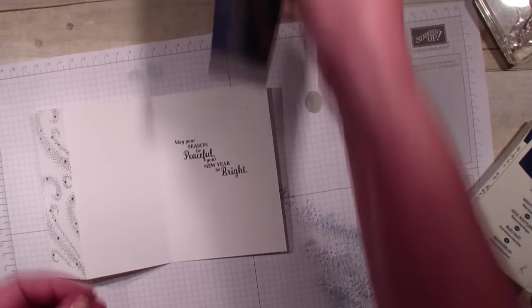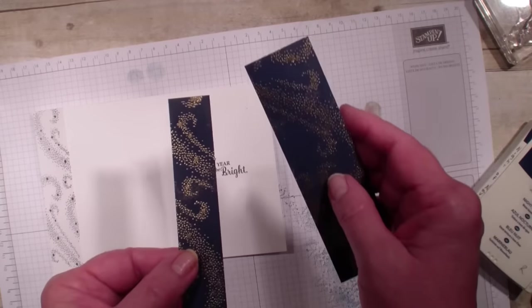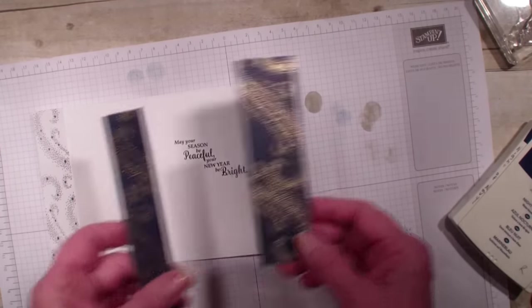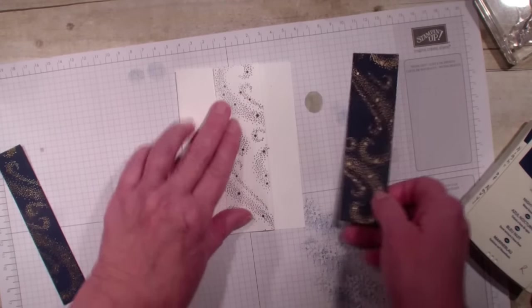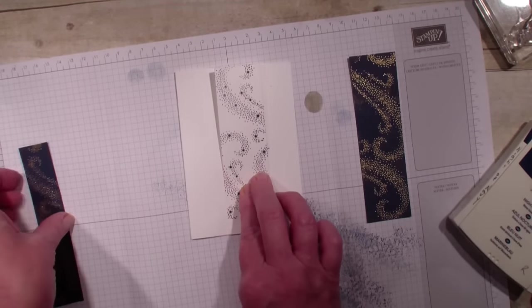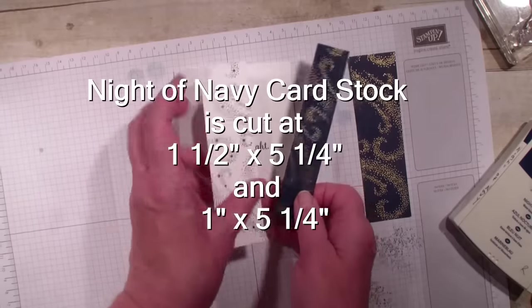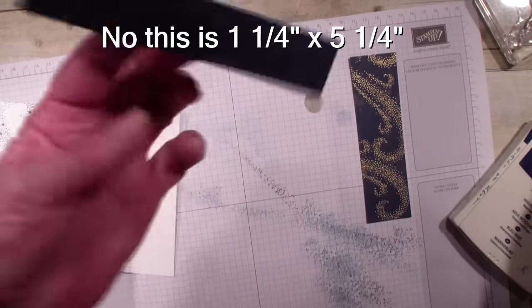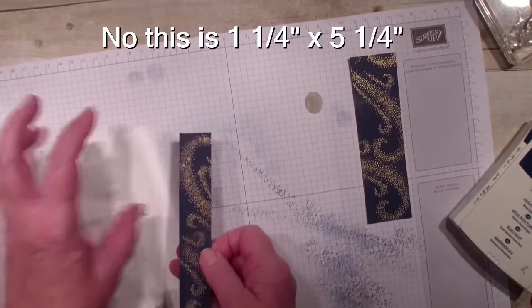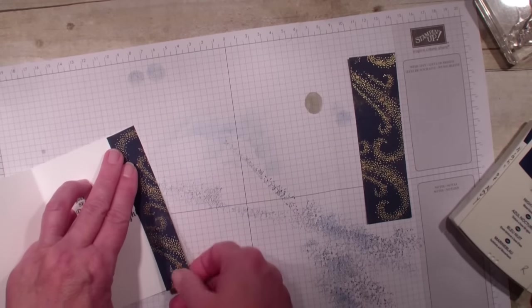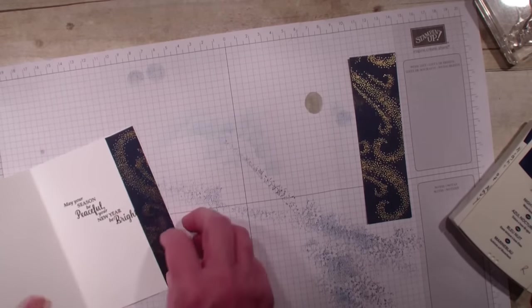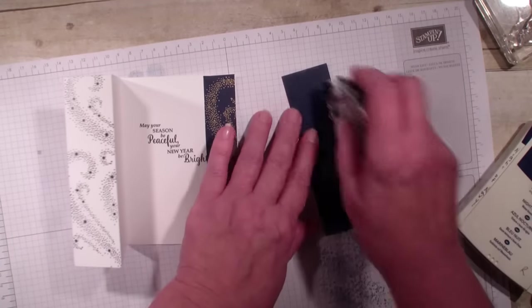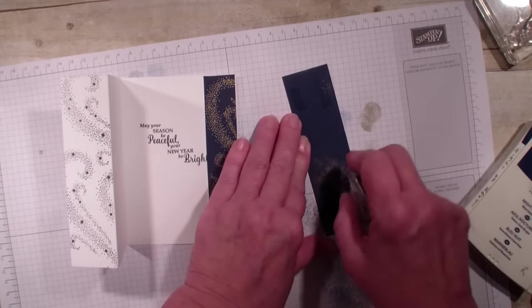Now what I have already done, I have taken two pieces of Knight of Navy. One measures one inch by five and a half and the other is inch and a half by five and a half. I am just going to take and put this on the inside. I believe I said this was inch. This is that inch and a quarter that I scored back on the front of that card. Just by adding that little piece of Knight of Navy, it completely changes it.